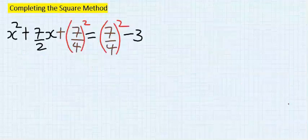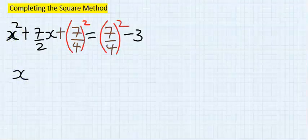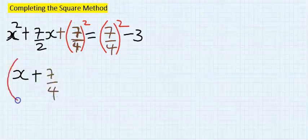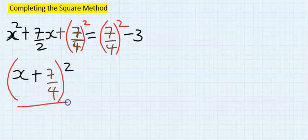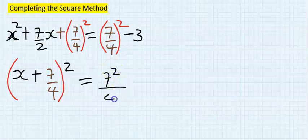Step number five: the value with the square here is x, and the value with the square is seven over four. I will put both together and square them. If you expand these brackets you will get all this back, and on the other side I'm going to get seven squared over four squared minus three.